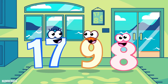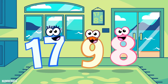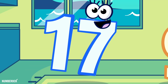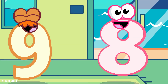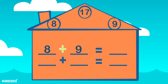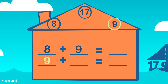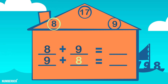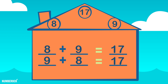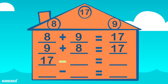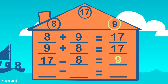At the Fact Family's house in the Ocean State, there's a 17, a 9, and an 8. Whether 8 plus 9, or 9 plus 8, 17's the sum we calculate. 17 minus 8 equals a difference of 9.